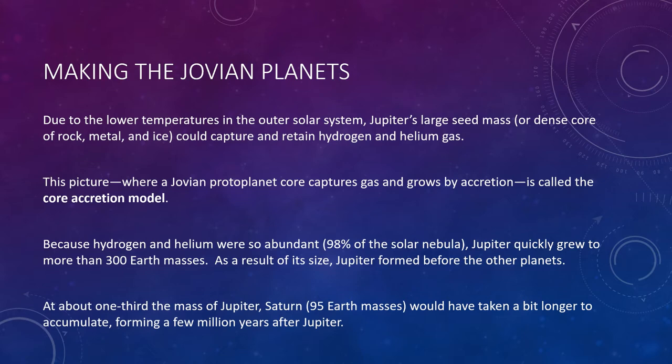Due to the lower temperatures in the outer solar system, Jupiter's large seed mass could capture and retain hydrogen and helium gas. This is the core accretion model: as Jupiter grew, its increasing gravitational pull let it capture more gases, growing to over 300 Earth masses. Farther out, Saturn went through a similar process, with its 95 Earth masses accumulating a few million years after Jupiter. Uranus and Neptune formed well beyond the snow line, where temperatures were cold enough for additional ices of carbon dioxide, methane, and ammonia to form the bulk of these planets.